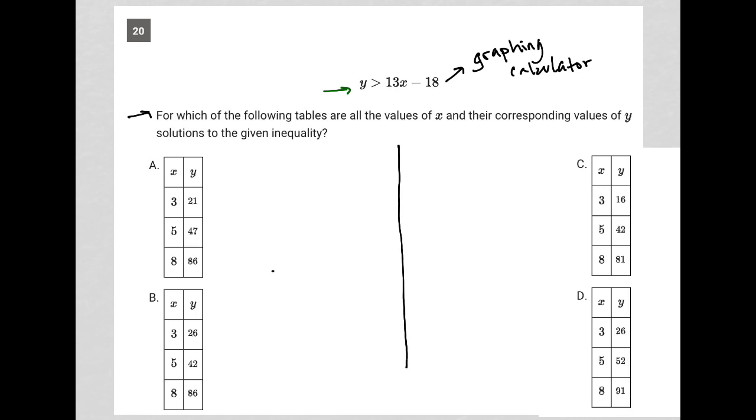So once you graph this, you'll see that our graph should look something like, and I'll use red for my line color here. Let's call this a negative 18 for my y-intercept.